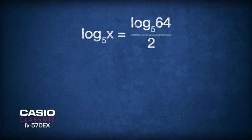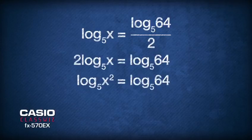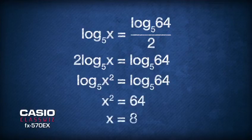Using the same formula that we used earlier to simplify logarithm base 5 of 25, we now write 2 logarithm base 5 of x as logarithm base 5 of x squared. And thus, comparing both sides of the equation gives us x squared equals 64 and we can solve that x equals 8.